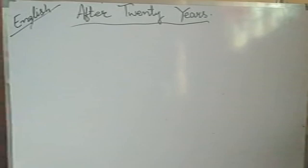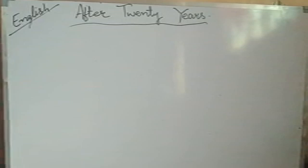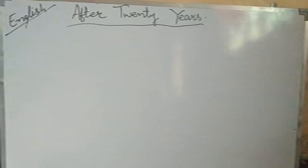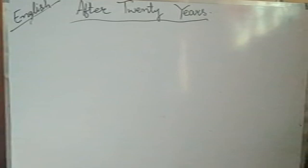Good morning dear students, today we are going to learn lesson number two, After Twenty Years, written by O. Henry, a well-known writer. It is a story about two friends who departed twenty years ago and decided to meet again after twenty years at the same place.